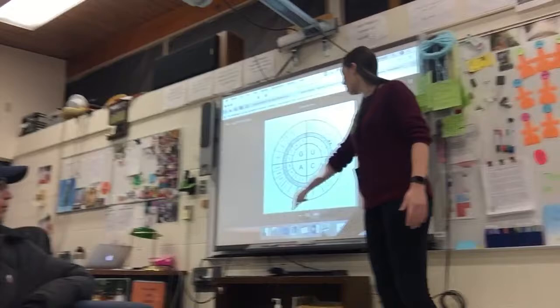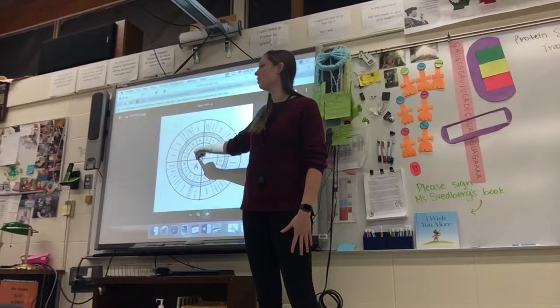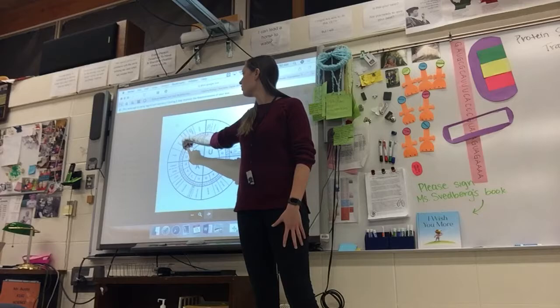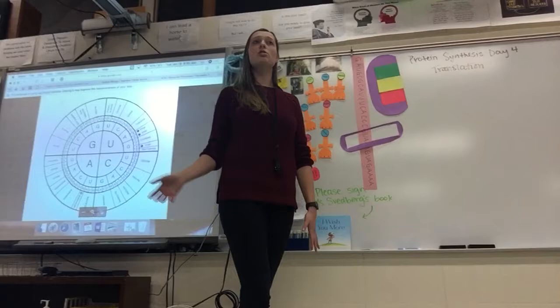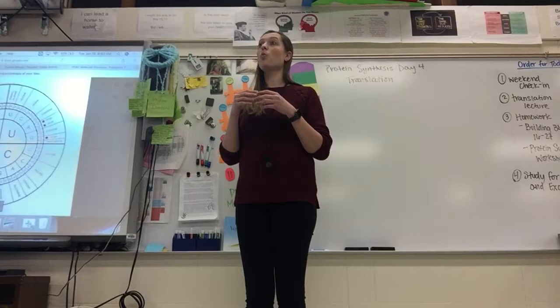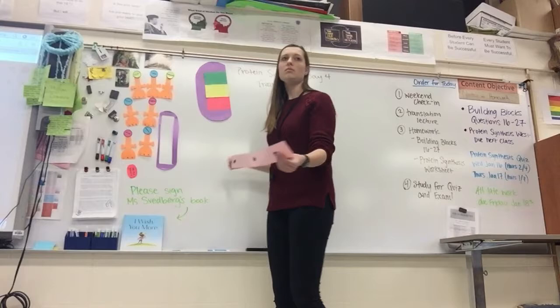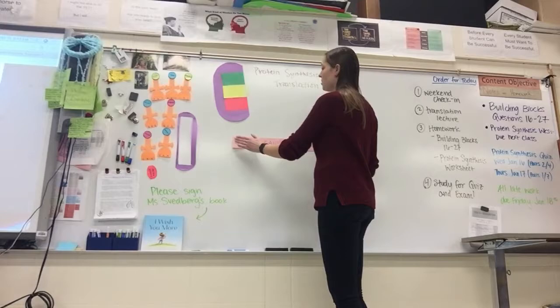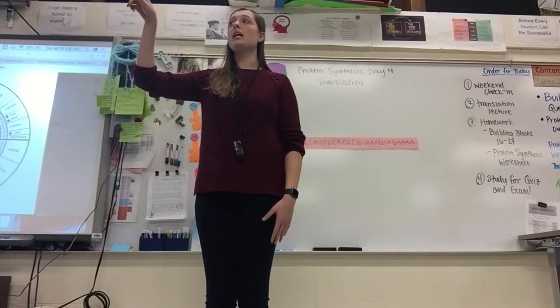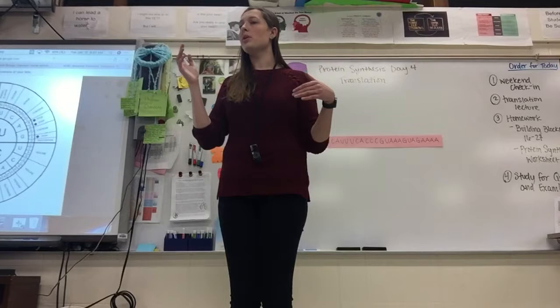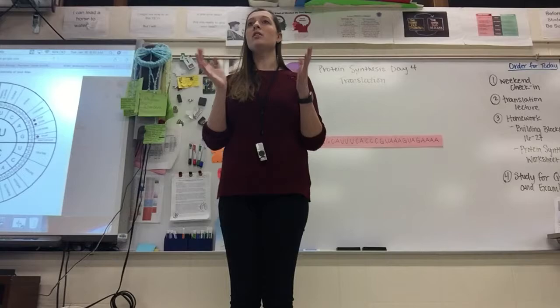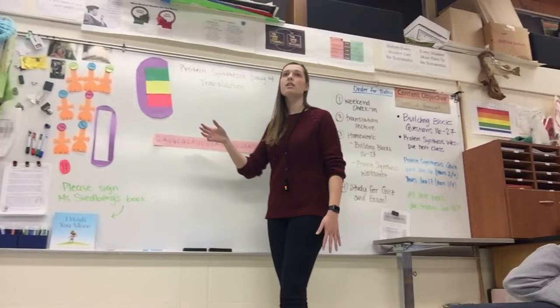We've already talked about the codon wheel — you're already familiar with how it works, starting at the middle with the first letter of your codon, going out for the second letter and again for the third, and it tells you which amino acid you have. Now we're just going to talk about the process by which we stick all of these amino acids together to make our one long protein chain. The tRNA molecules brought in the amino acids into the ribosome. Transcription, editing, and splicing all happened within the nucleus. Now we're moving the mRNA strand out into the cytoplasm and into the ribosome.